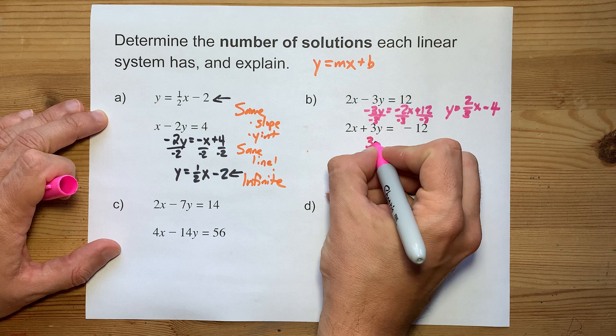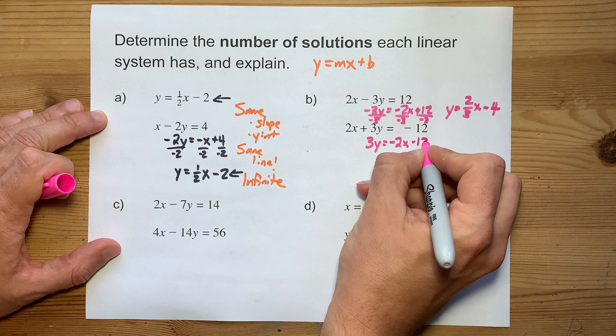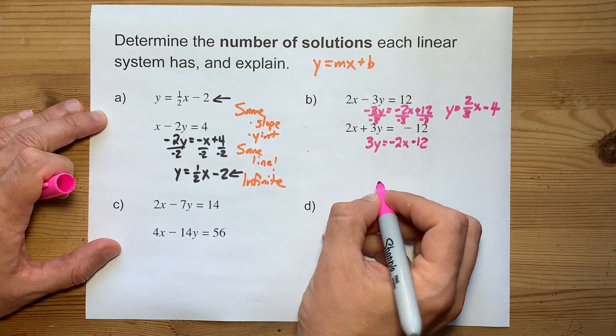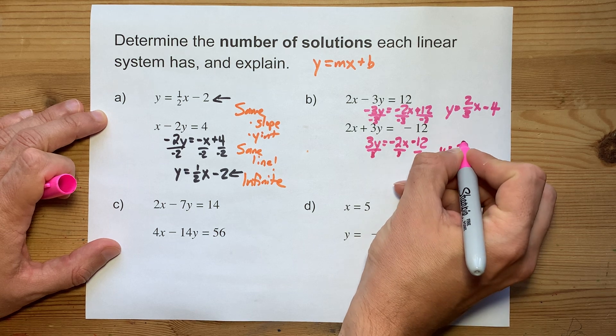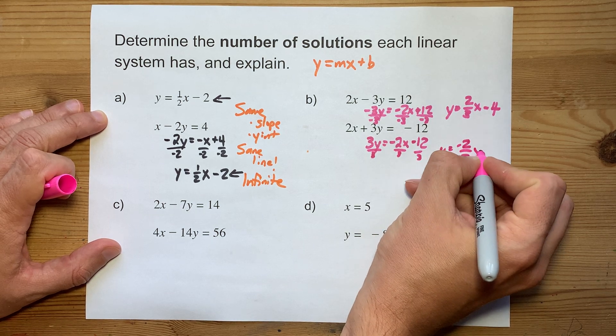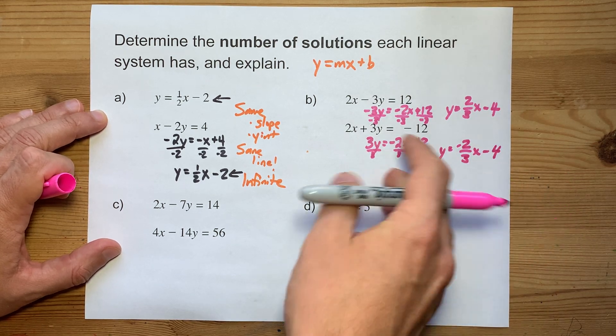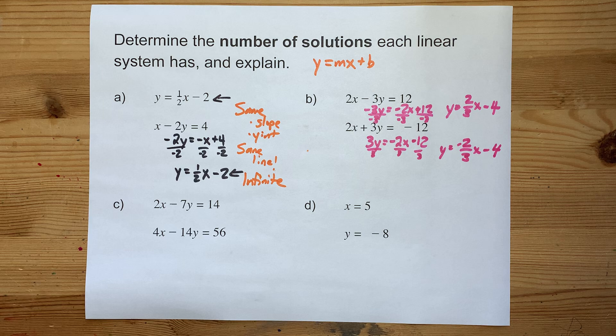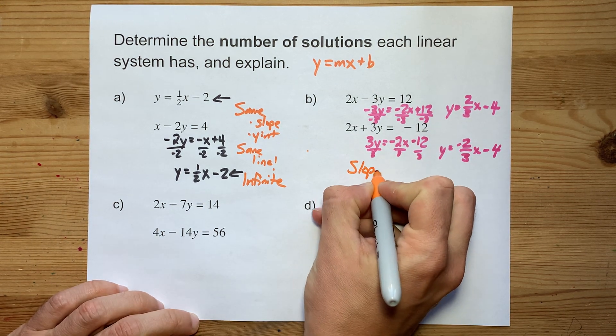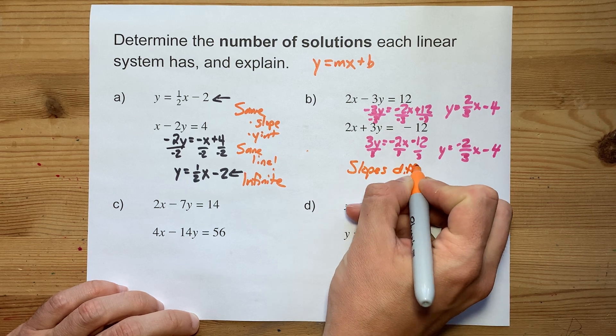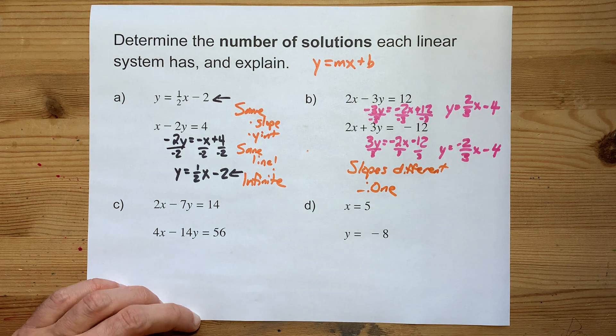I'm going to do the same thing here. Move the 2x to the other side, so it becomes minus 2x. This negative 12 stays negative 12. Divide it all by 3. y equals negative 2 over 3x. Negative 12 divided by 3 is minus 4. Now these have the same y-intercept, but what really matters is that the slopes are different. As soon as the slopes are different, I guarantee you there is exactly one point of intersection.